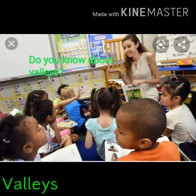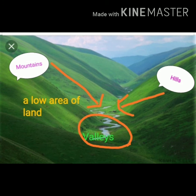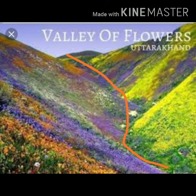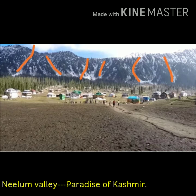Hi children, do you have any idea about valleys? We have to see the next topic: valleys. A valley is a low area of land between mountains and hills, such as the valleys of Kashmir.